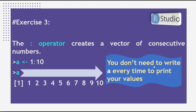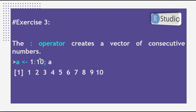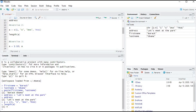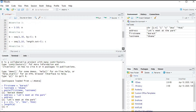A shortcut: if you want to assign a vector to a and print it at the same time, you write the assignment and then a semicolon followed by a — your vector will be printed immediately without writing a separate print statement.